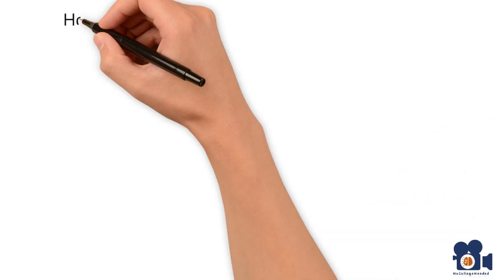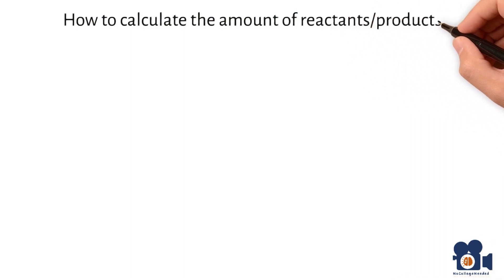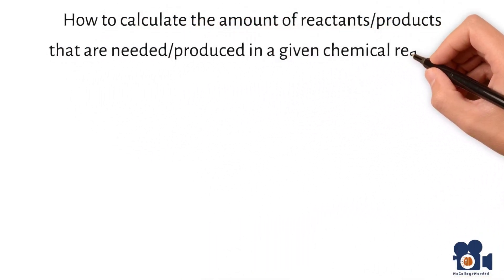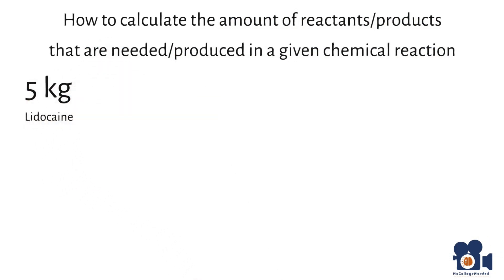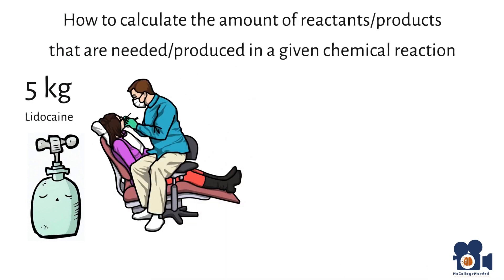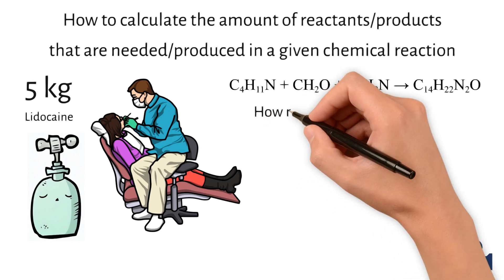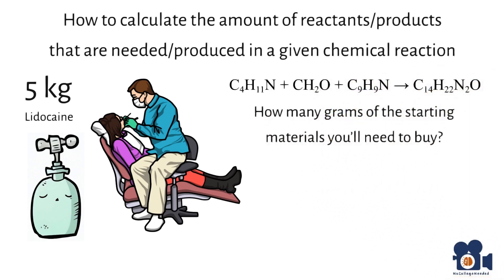One of the most fundamental equations you'll need to solve for as a chemist is how to calculate the amount of reactants or products that are needed or produced in a given chemical reaction. Let's say you're a medicinal chemist that just got an order from your boss for five kilograms of lidocaine, a local anesthetic commonly used at dentists. You're a perfect chemist, and you have made it before, so you know one of the synthesis, which is C4H11N plus CH2O plus C9H9N going to C14H22N2O. But you need to know how many grams of the starting materials you need to buy. So where do you start?